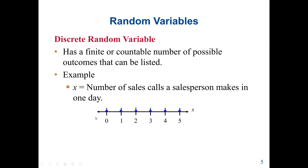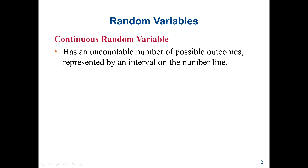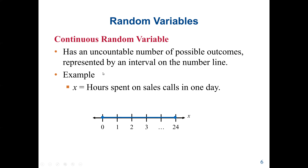A continuous random variable is based on measurement. It has an uncountable number of possible outcomes represented by an interval on the number line. For example, a weight could be 20.7892 kg. Another example is hours spent on sales calls in one day.